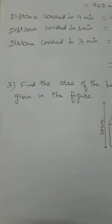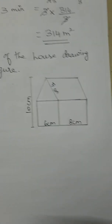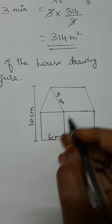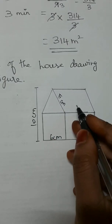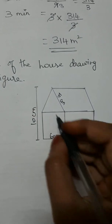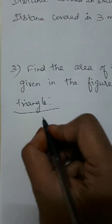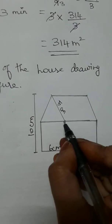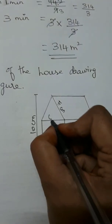Next question 3: Find the area of the house drawing given in the figure. Looking at the diagram, we can identify the shapes: one triangle, one parallelogram, one square, and one rectangle. We need to look at the measurements for each shape.